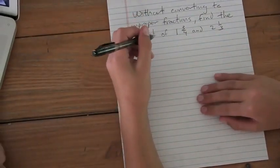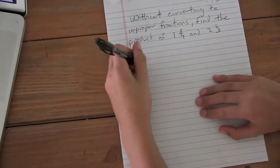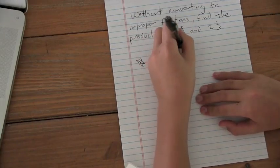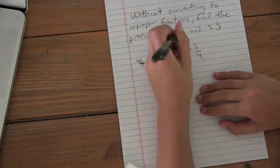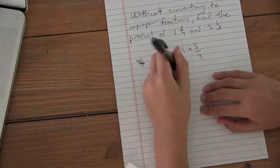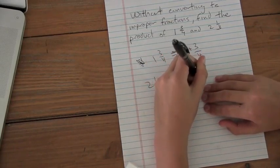Okay, sorry. I'm just going to pull my computer out of your way. So what I can do is 1 and 3/4 equals 1 plus 3/4. And 2 and 1/3 implies 2 plus 1/3.